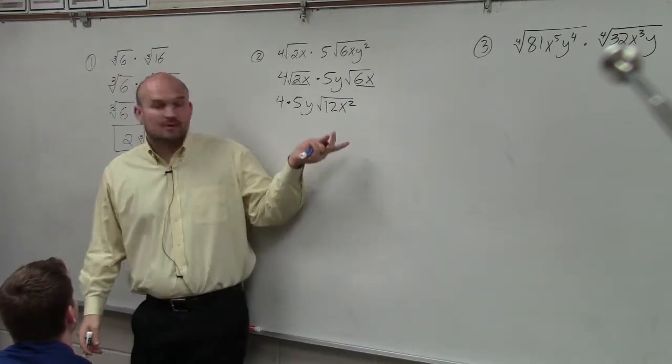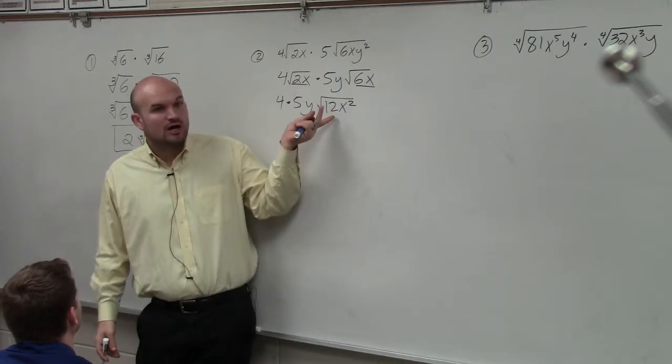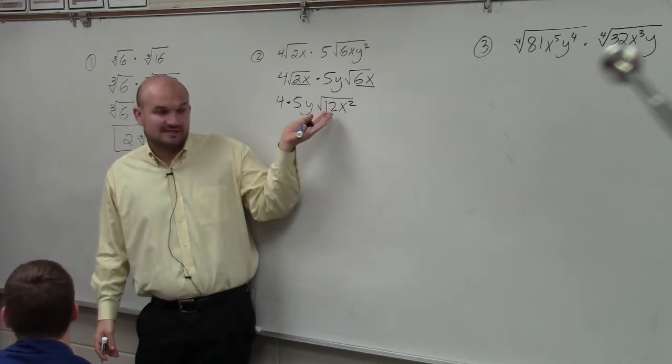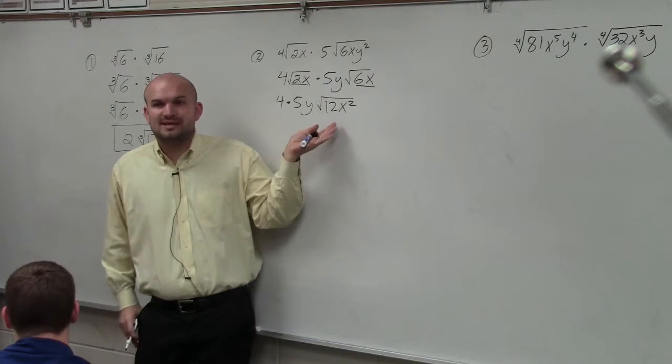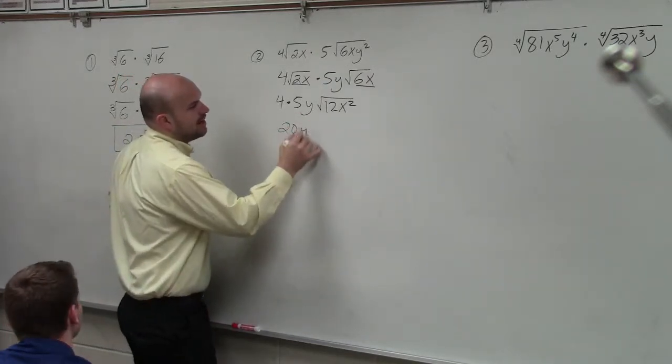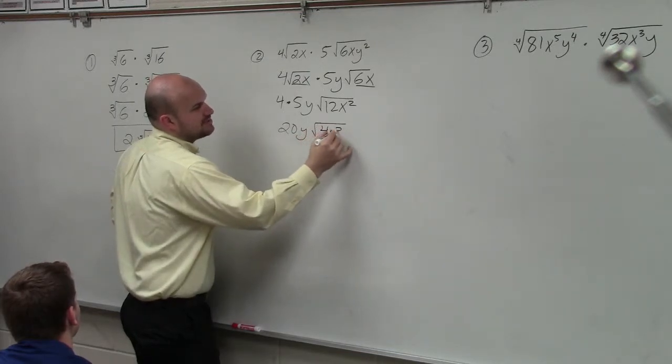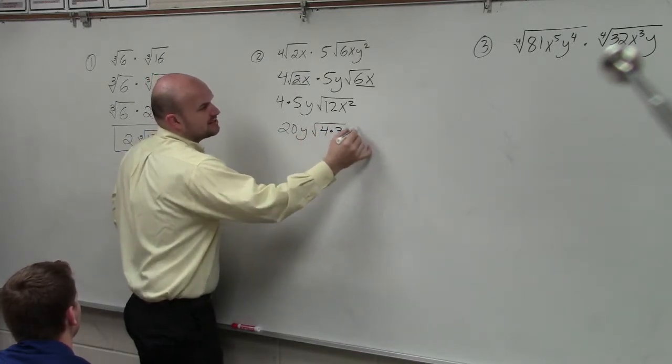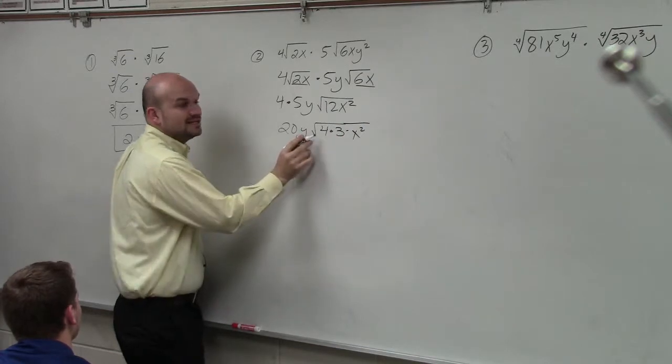And then the last thing I want to do is, can I rewrite 12? No, I can't take the square root of 12, but is there a square number that divides into 12? It's 4, right? So I have 20y times the square root of 4 times 3 times x squared. I can take this through.